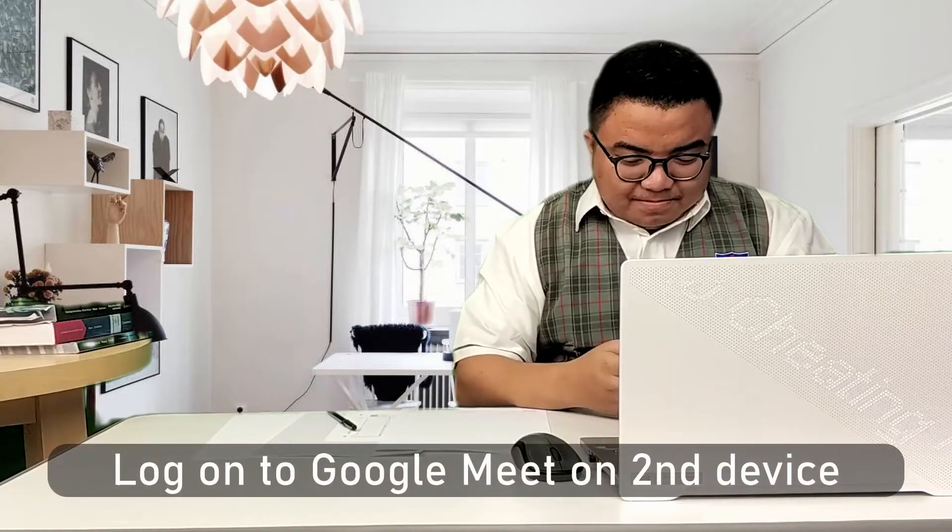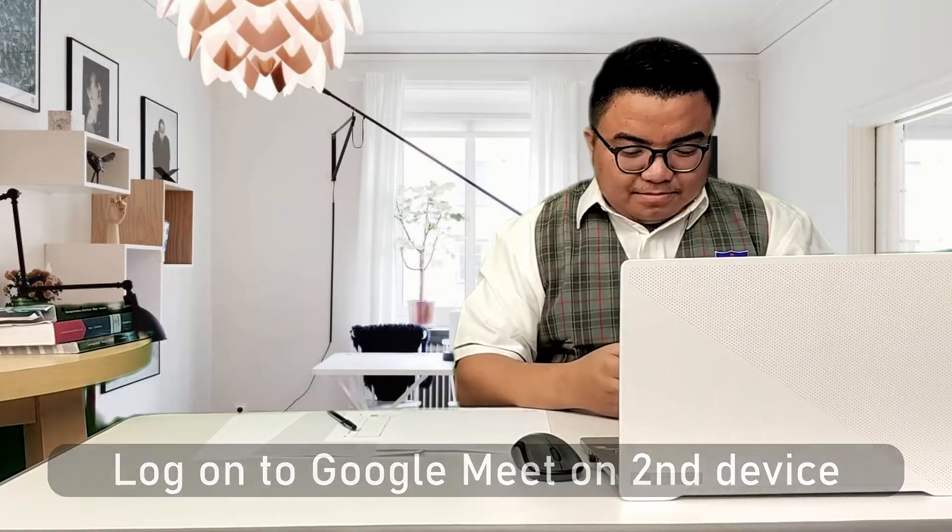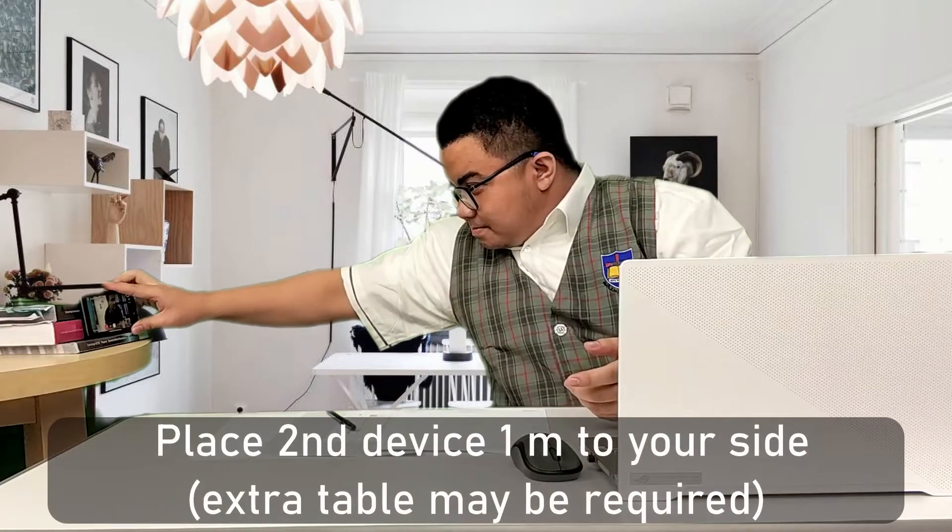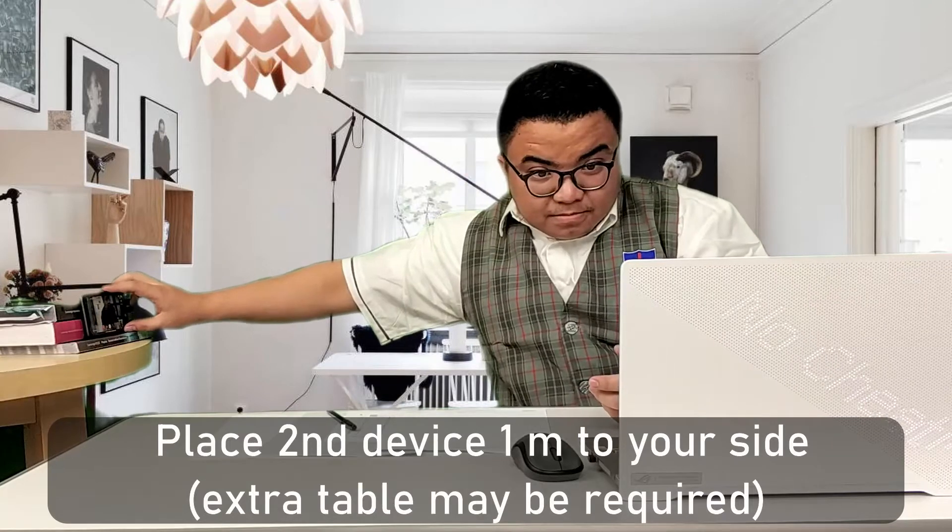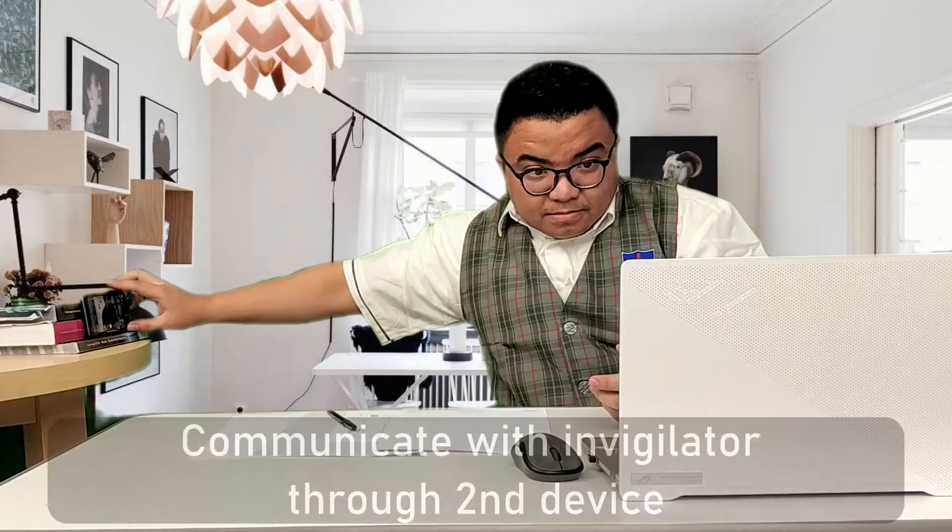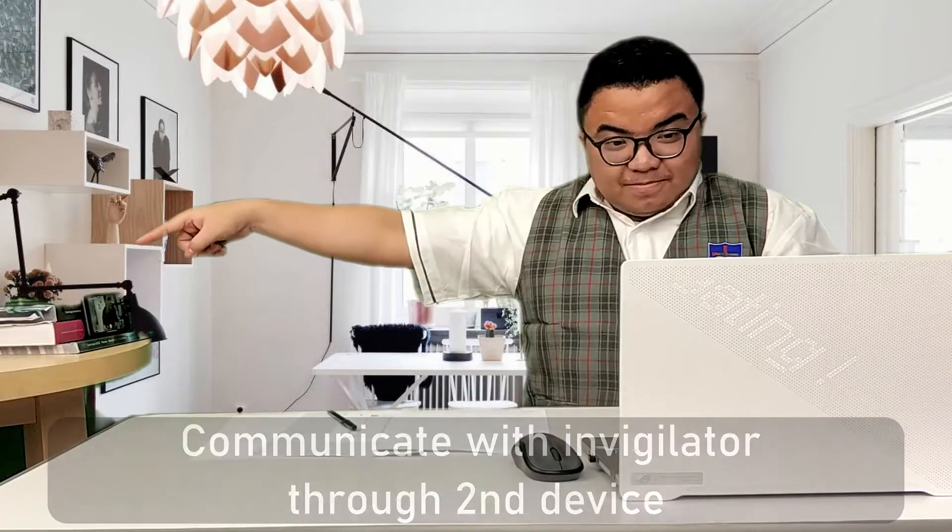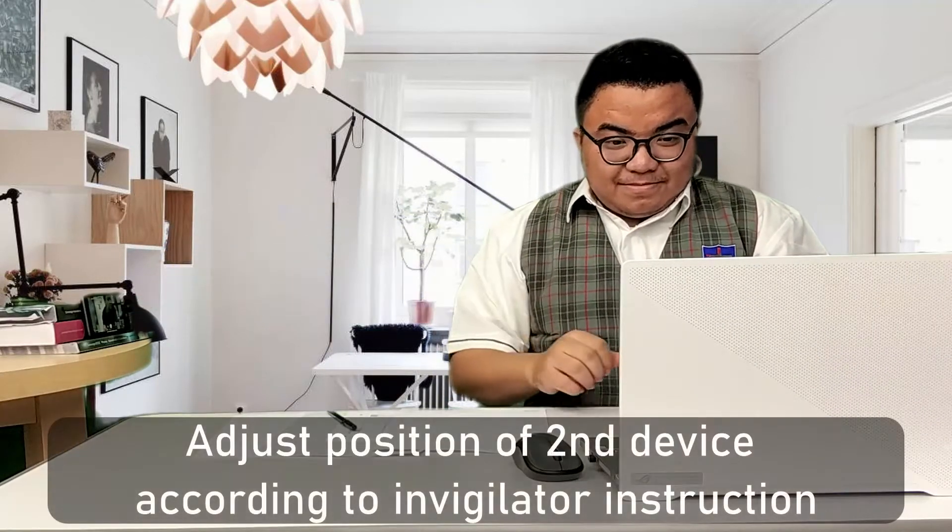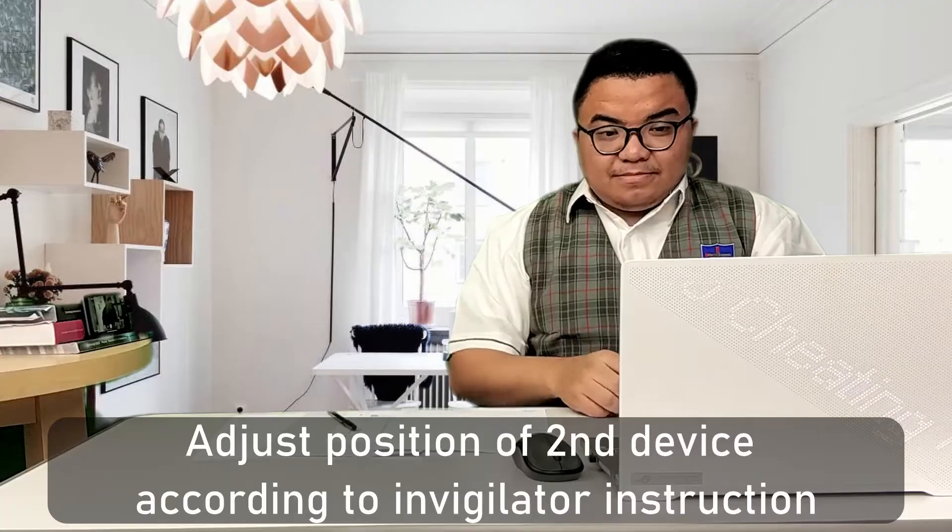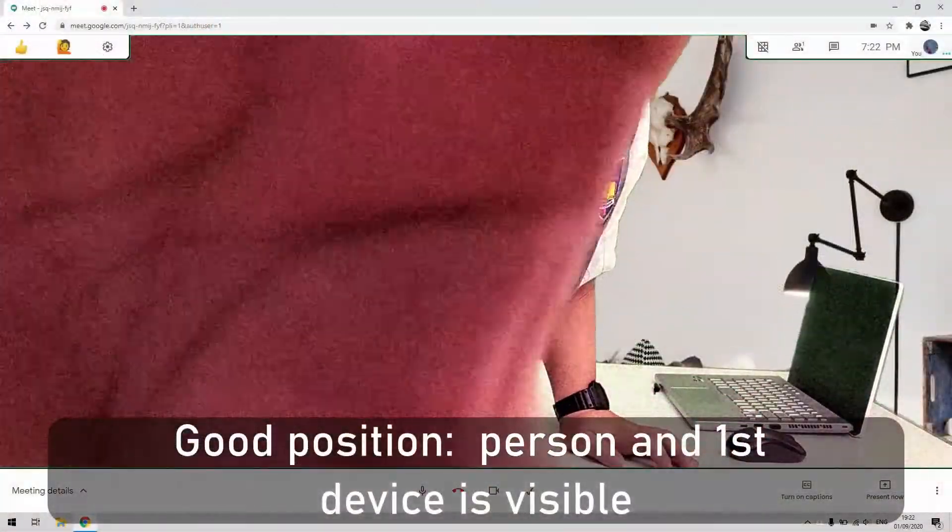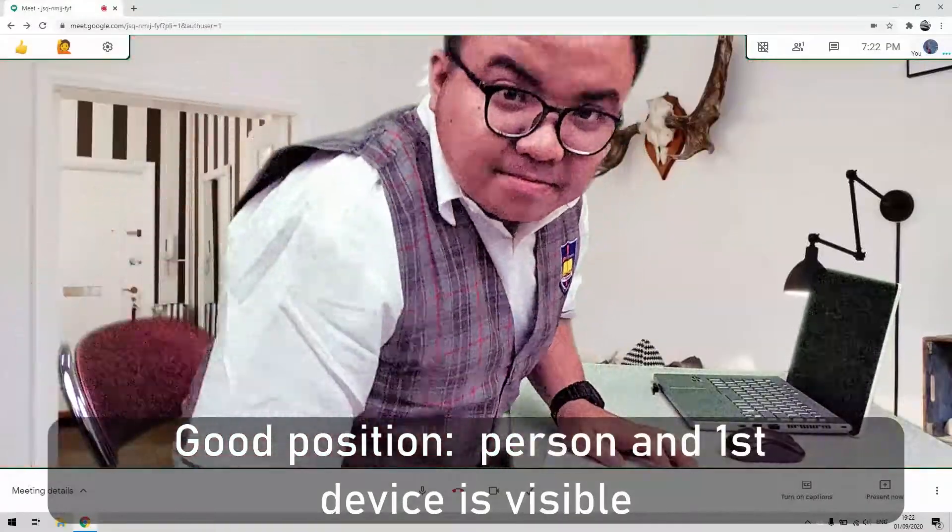Log on to Google Meet on your second device. Place the second device one meter to your side. You may need an extra table for this. Communicate with your invigilator through your second device to adjust the position. A good position allows the invigilator to see you and your first device.